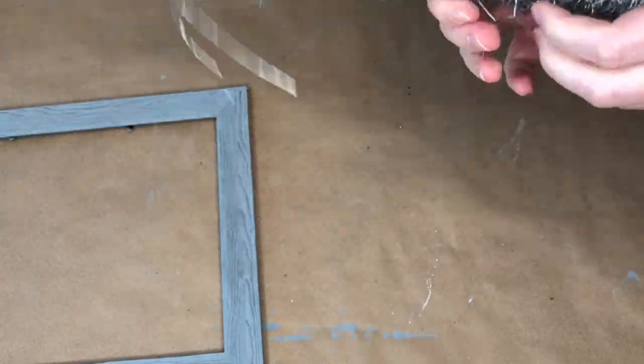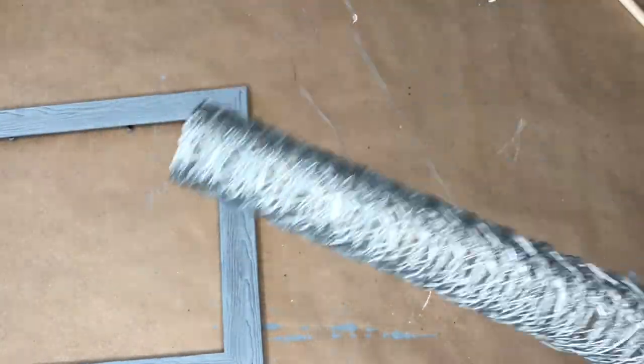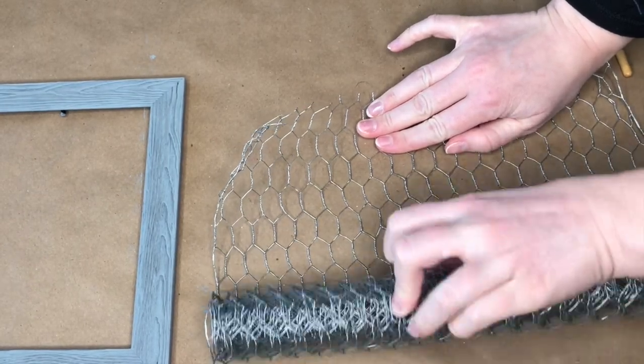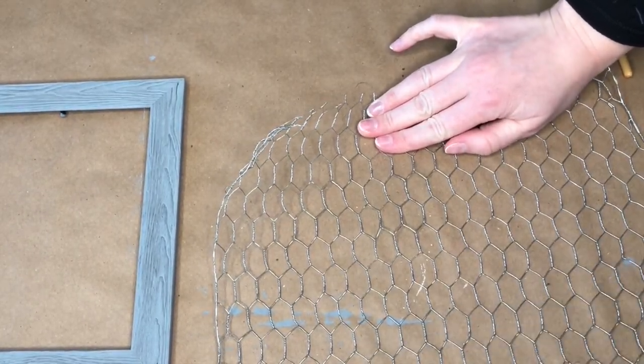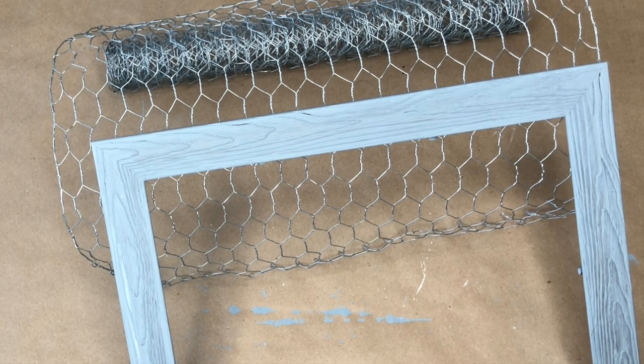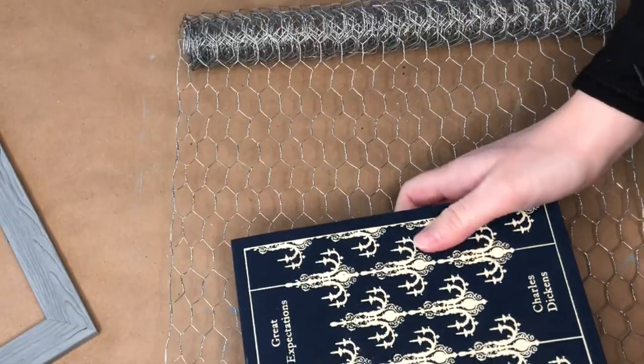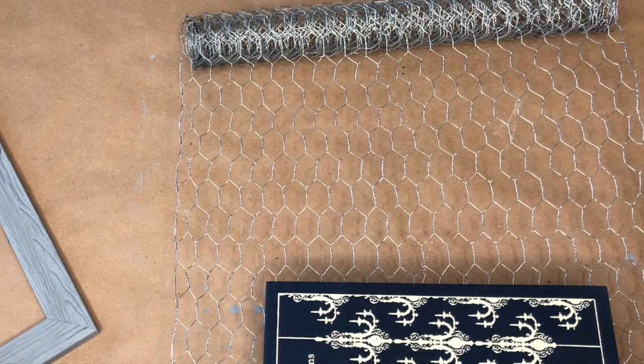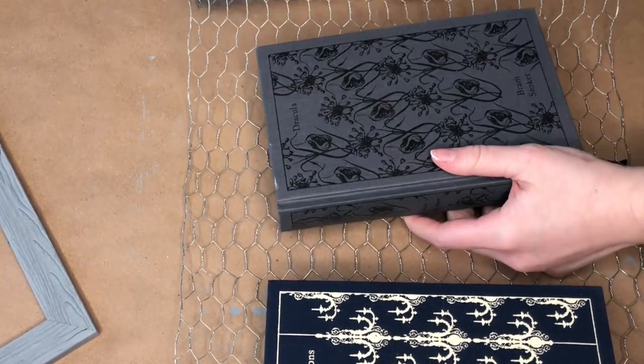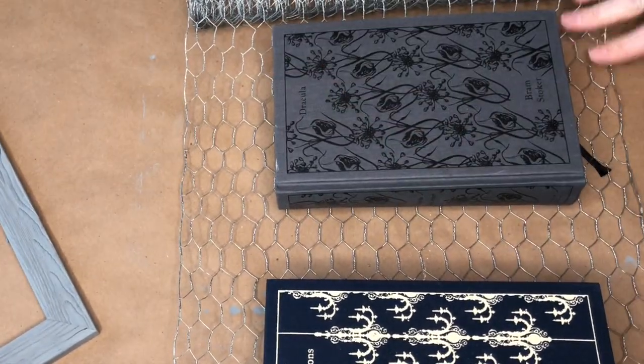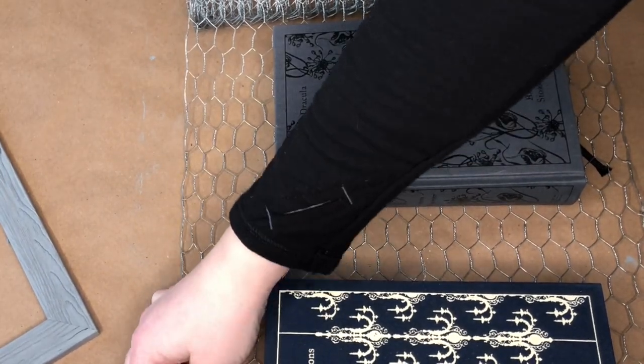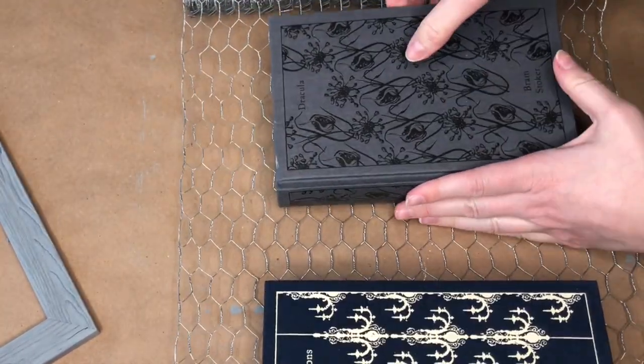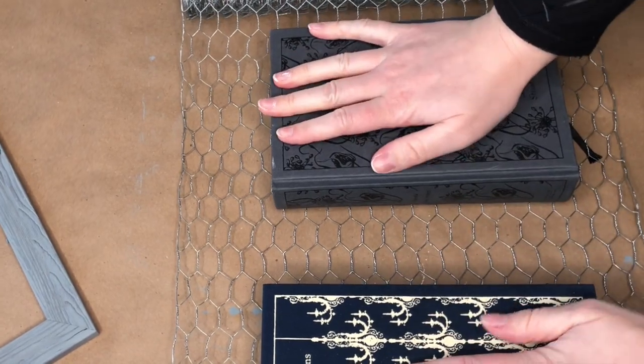And all I did was unroll it and it came out in a long sheet. Again, this stuff was a little bit challenging at first to work with. When I unrolled it, I just wanted to pop back up in its rolled form. So I did take two of my large books, Dracula and Great Expectations, and I just placed them on top of the chicken wire and left them for about 30 minutes because I wanted the chicken wire to be a little bit easier to work with and not keep popping up on me.